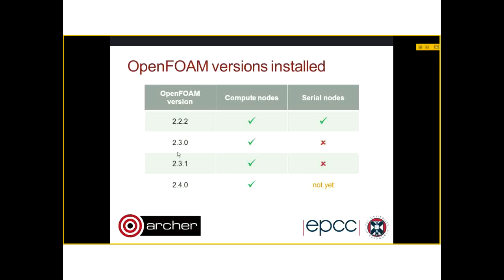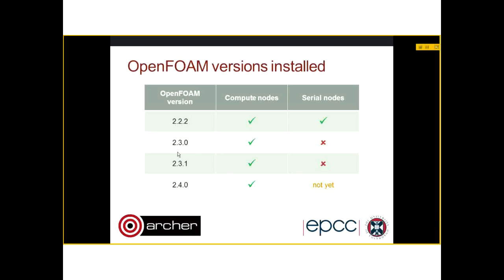In general, I would recommend you use the latest version. All the bug fixes that OpenFoam have found will have been added. The reasons to keep with an older version is if you're doing a long series of runs and you want a stable version rather than necessarily an up-to-date one, or you've validated a particular version against some experimental data, or you've developed code for a particular version. But in that case, the recommendation is to update your code to work with the latest version.